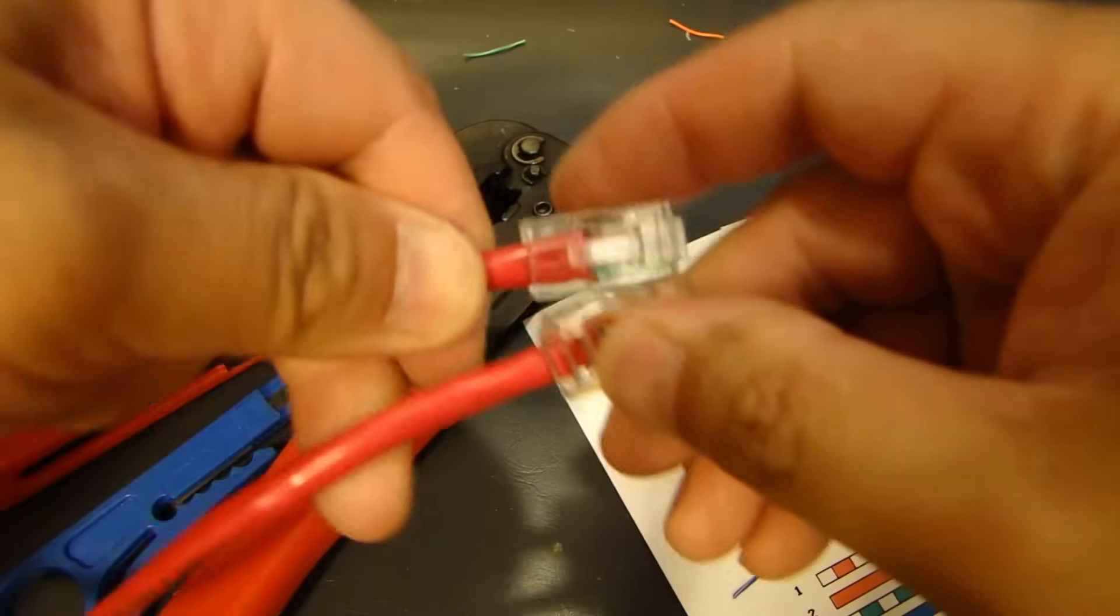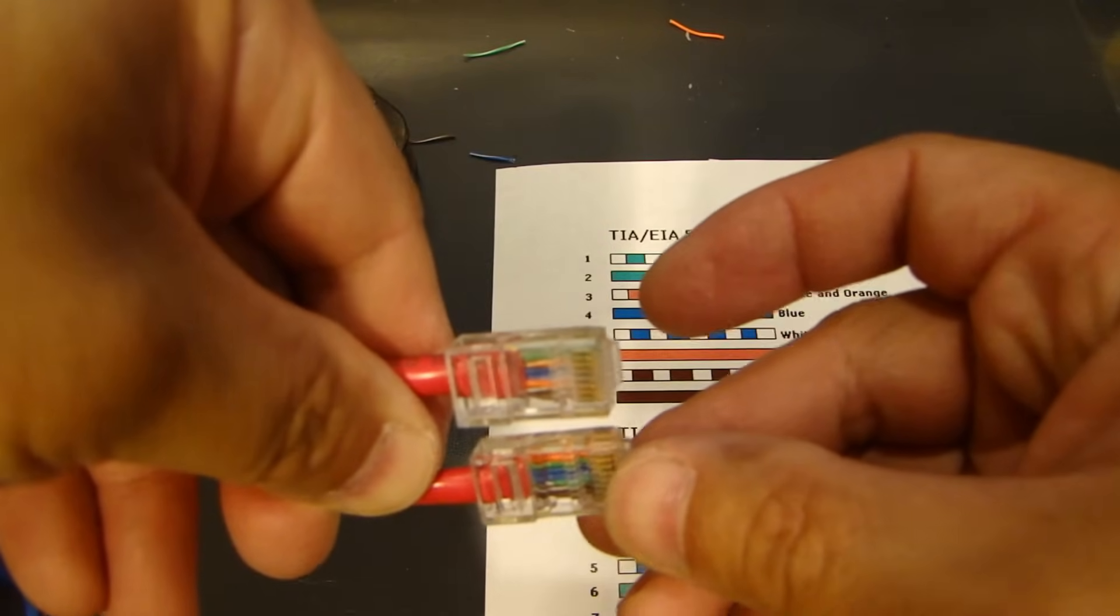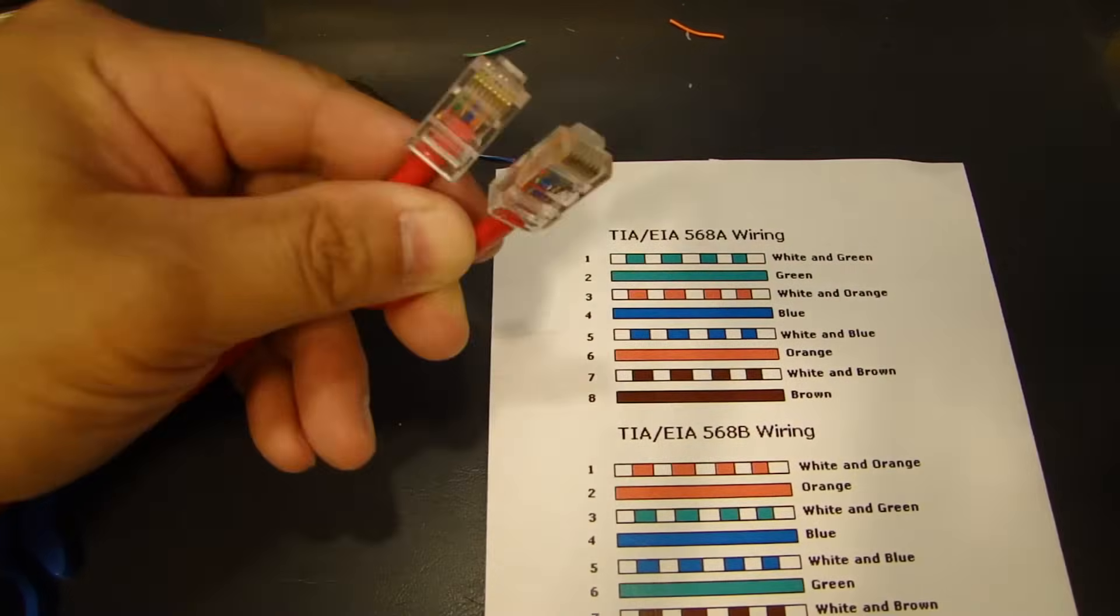If I put this end to end, you'll see that the top one starts with the white, green, green. And the bottom one starts with the white, orange, orange. So, this makes it a crossover cable.